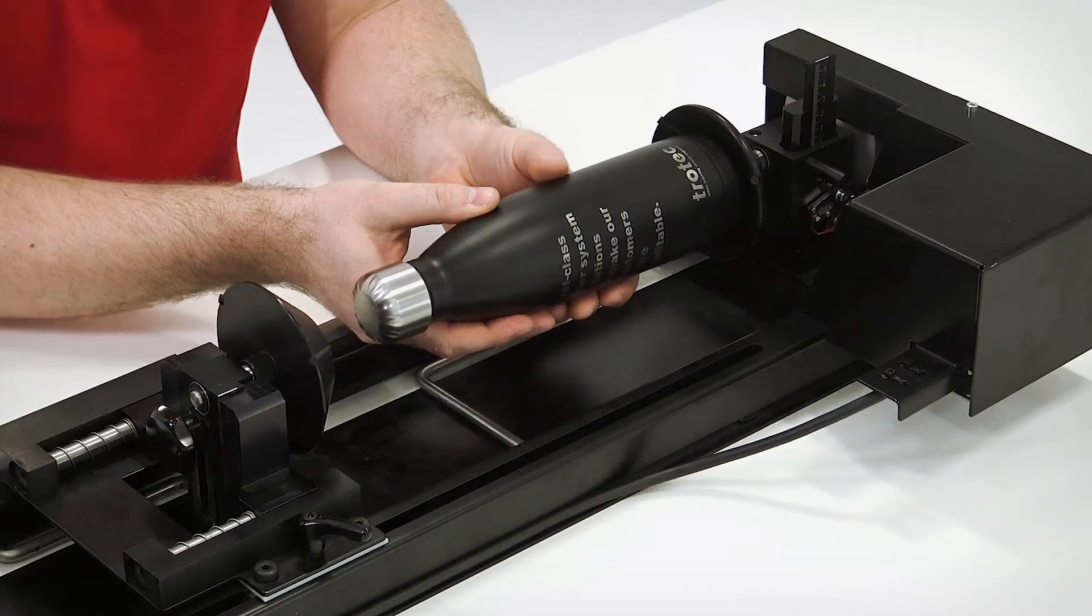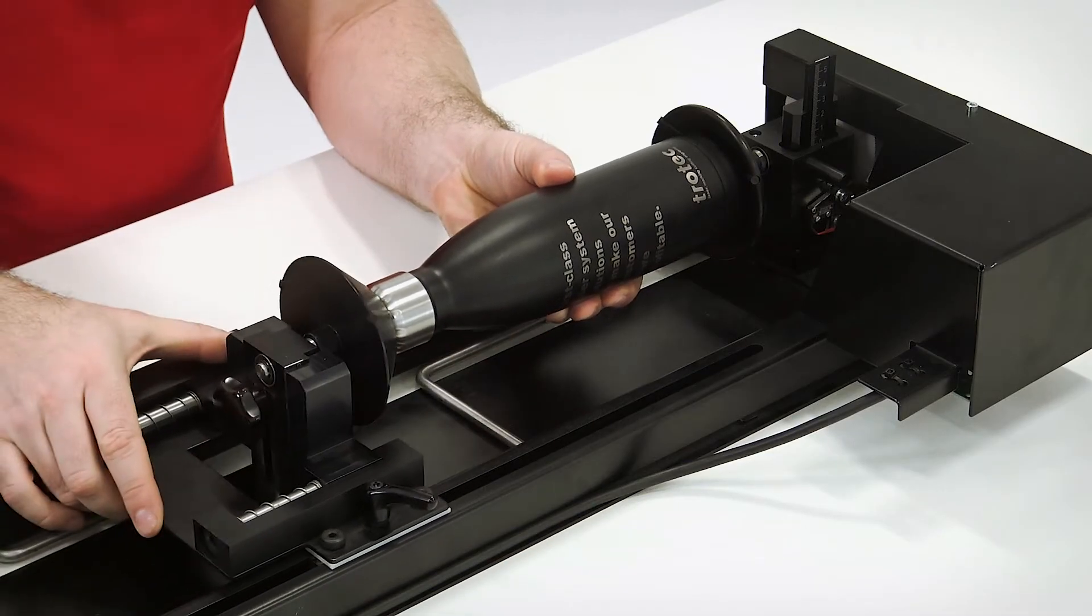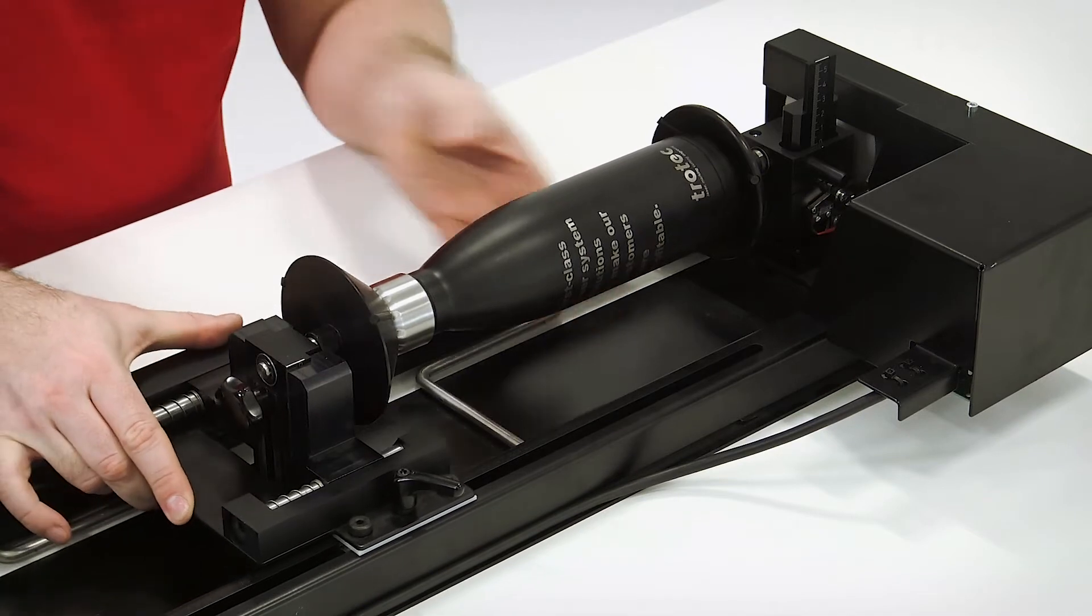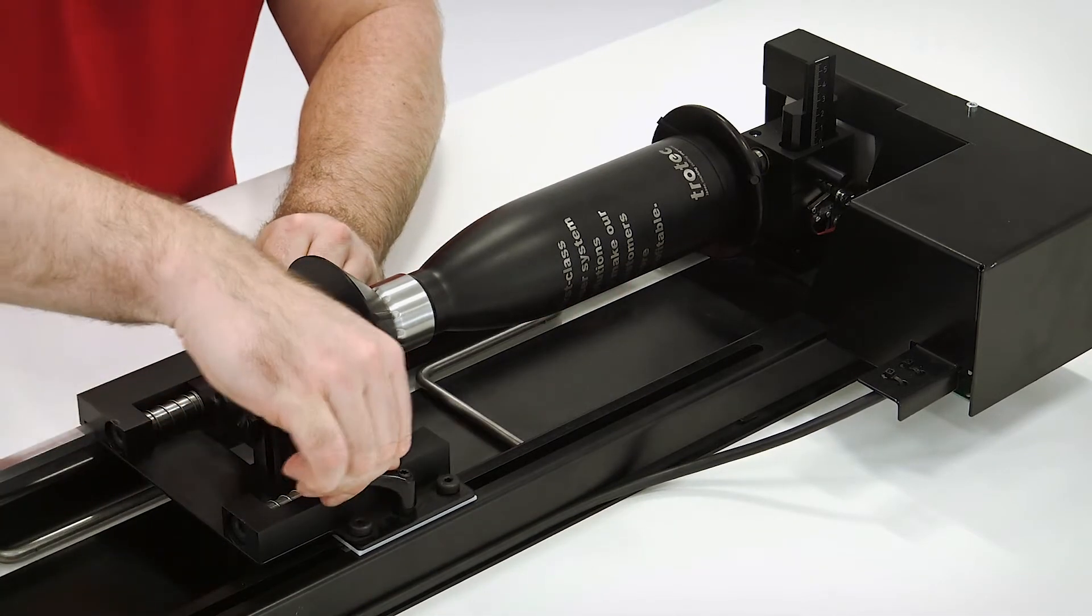Place the cylindrical object, in this case a bottle like this, then push the moveable cone towards it and once it sits properly, tighten the lever.